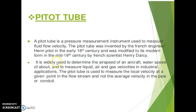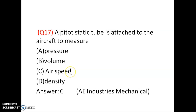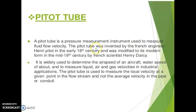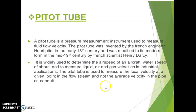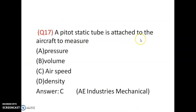The Pitot tube is also a flow measurement device, but it also measures air speed, velocity, or local velocity. It was invented by a French engineer. It is widely used to determine the air speed of an aircraft, water speed of a boat, and to measure liquid, air, and gas velocities in industrial applications. It is used to measure the local velocity at a given point and average velocity in a conduit.